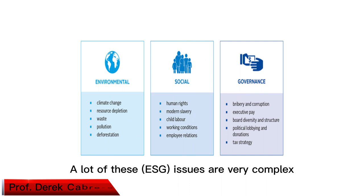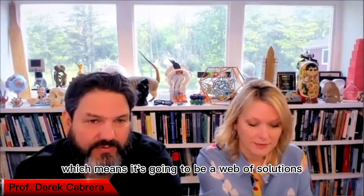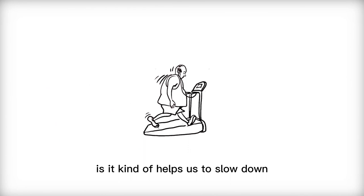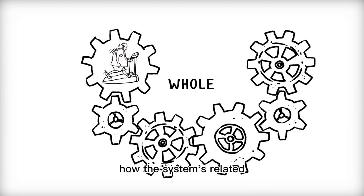A lot of these issues are very complex. They're a web of causality, which means it's going to be a web of solutions. And what systems thinking broadly does is it kind of helps us to slow down, identify the different aspects of the system, how the system is related, which perspectives are important to take, how things are interrelated.